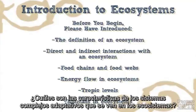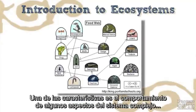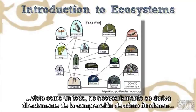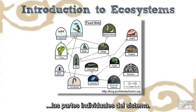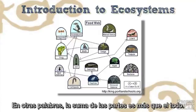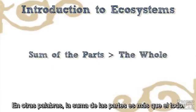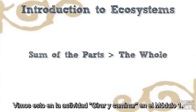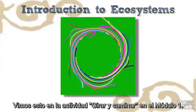What are the characteristics of complex adaptive systems that are seen in ecosystems? One characteristic is that the behavior of some aspects of the complex system, seen as a whole, doesn't necessarily follow directly from an understanding of how the individual parts of the system work. In other words, the sum of the parts is greater than the whole. We saw this in the turn and walk activity in Module 1.